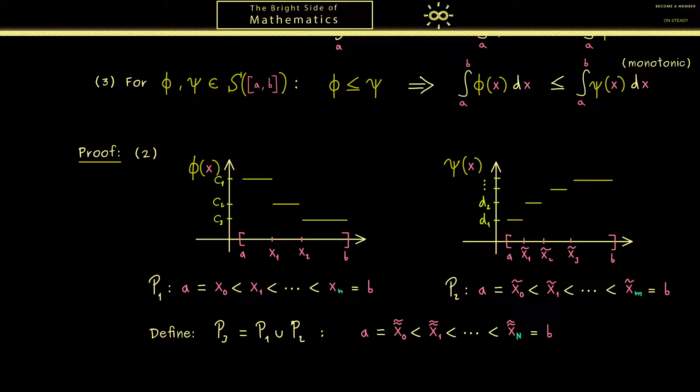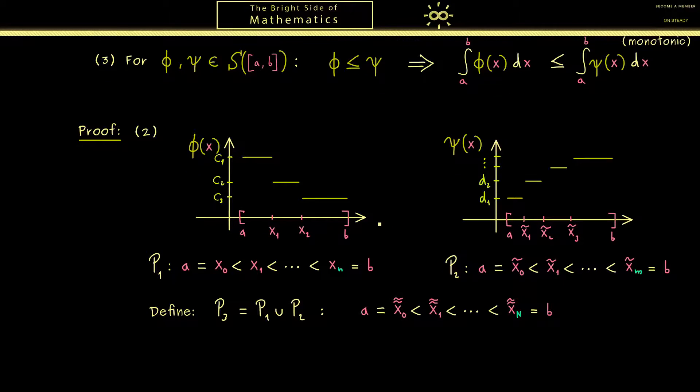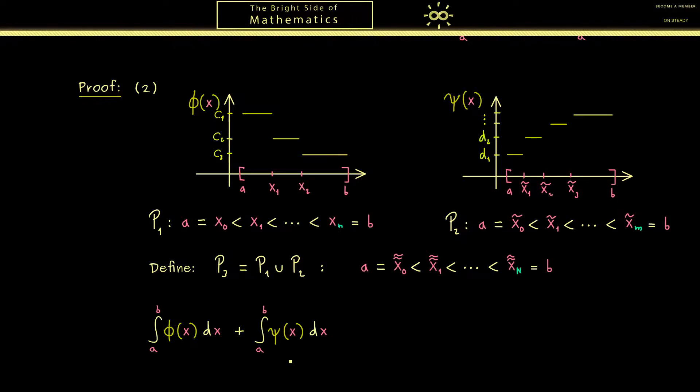Then we just get a new partition and maybe now we use double tildes to denote it. So you should see here the idea is now that we have enough points such that all the splits we need are included. The nice result here is now we can choose the same partition for both step functions. And with this we are able to combine both integrals. In other words we can calculate this and this integral with p3. And then adding shouldn't be a problem. As an additional remark here you should note that now I use capital N to denote the number of points in the partition. In general we would have more points than before but for the calculation it does not matter how many we have.